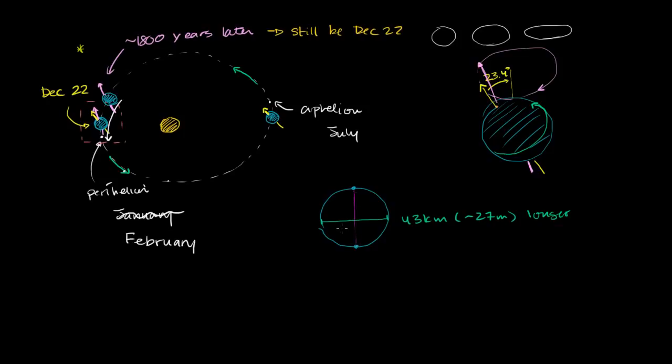And the fact that Earth has this equatorial bulge, that it's not a perfect sphere. Once again, I'm not going to go into the math here. It's the interactions between that one asymmetry of the Earth.